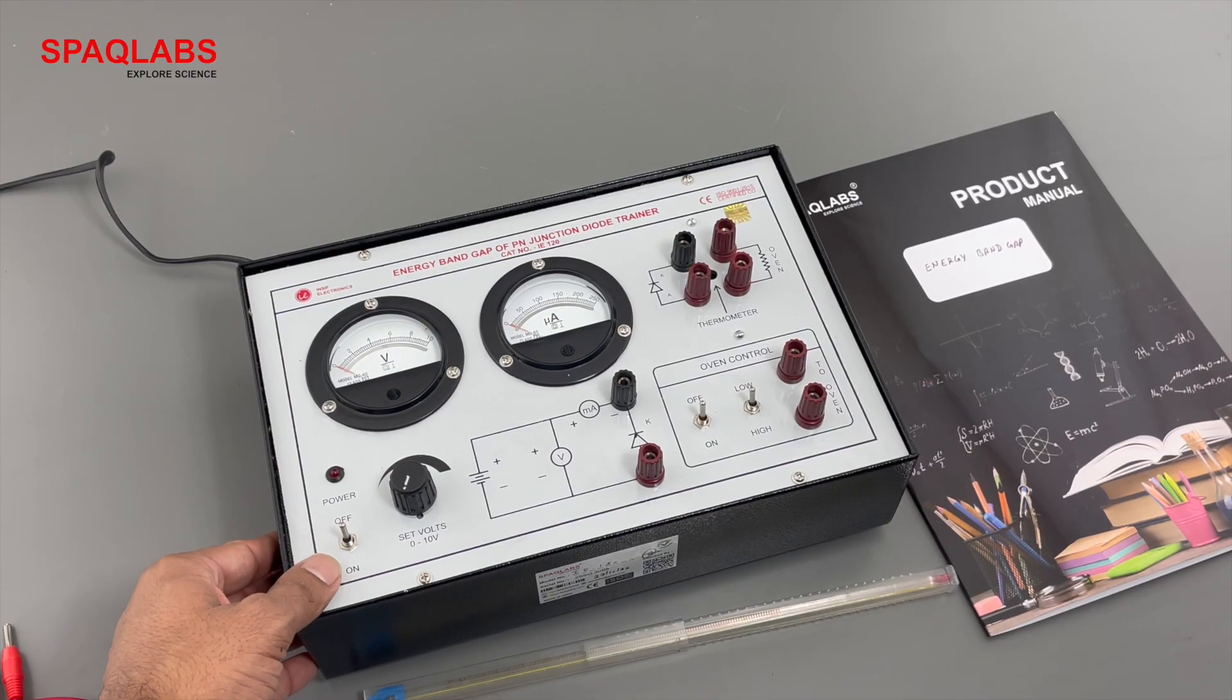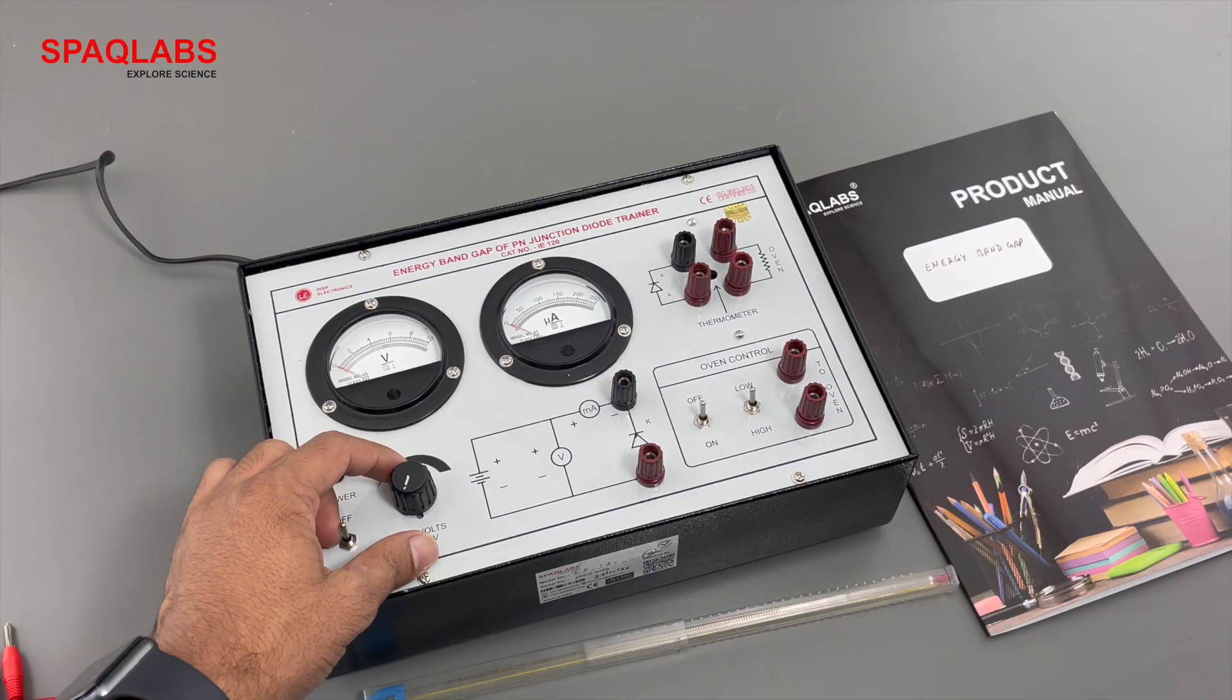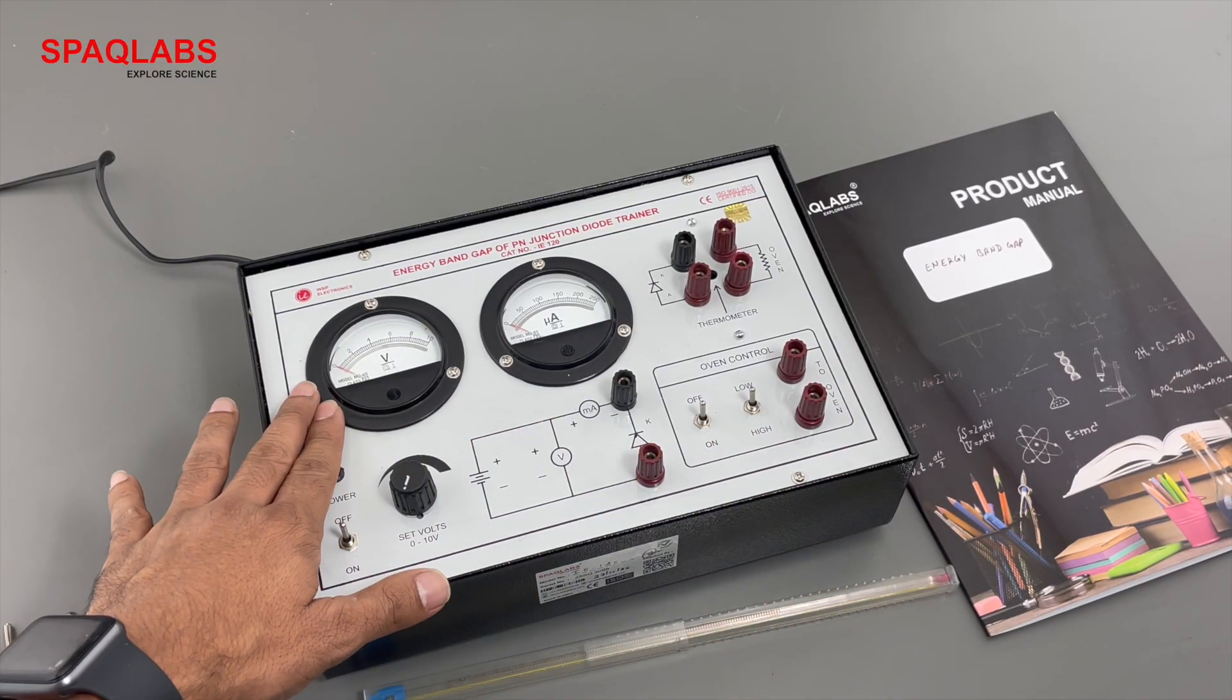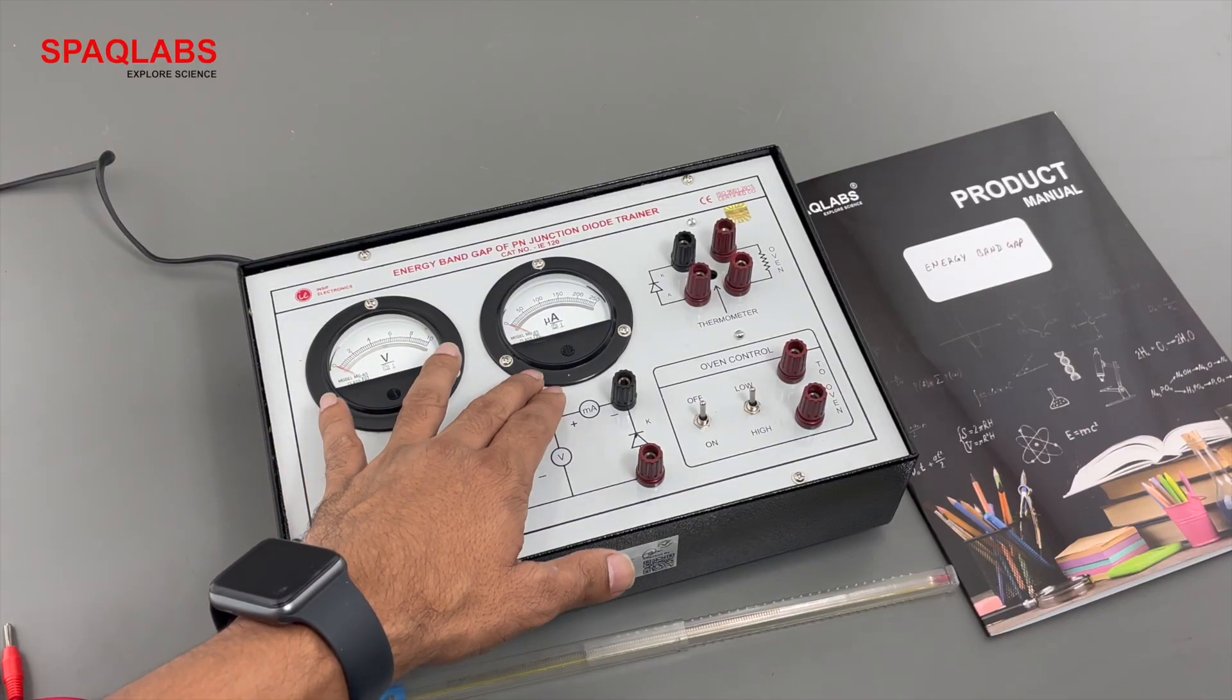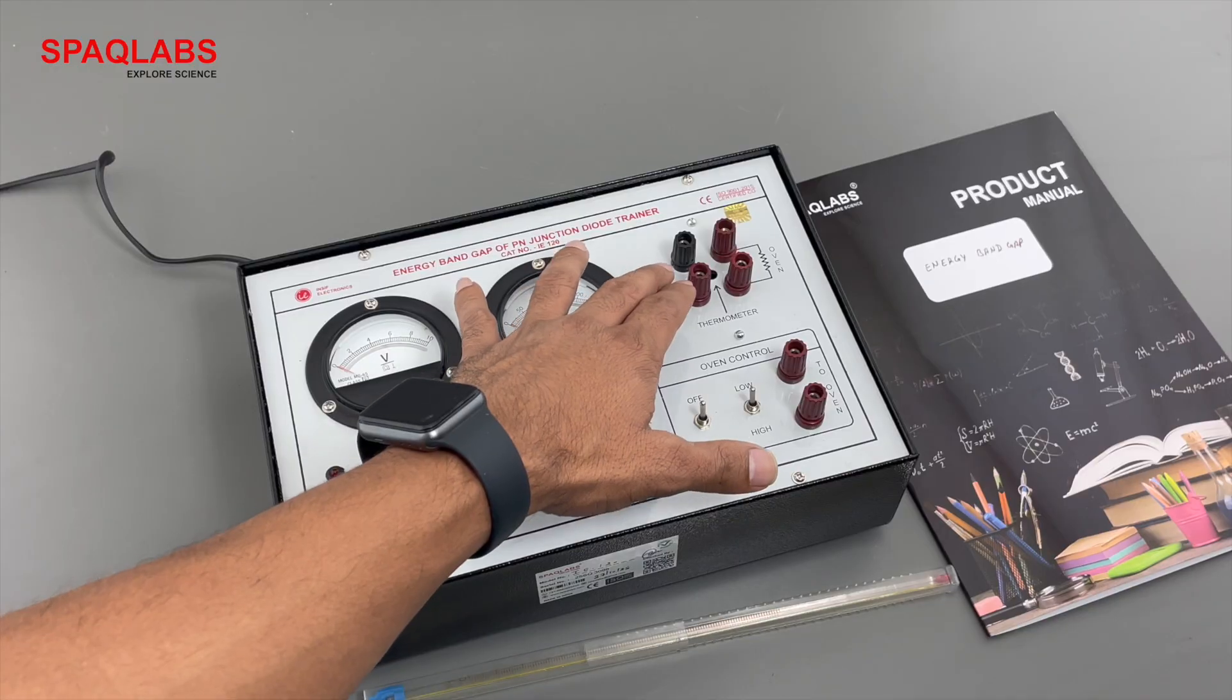Let's see how to perform an experiment on the energy band gap of a PN junction diode using this trainer. This is the trainer board, this is the power supply, here is the O1 control, and this is the onboard voltmeter and ammeter. The diode is internally connected.